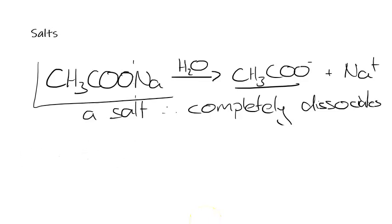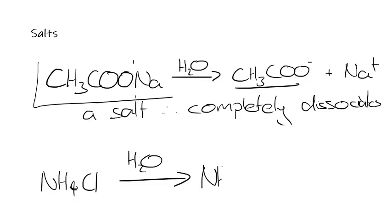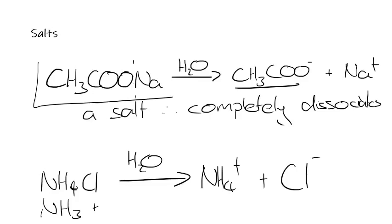Another common salt is NH₄Cl. That will also completely dissociate into NH₄⁺ plus Cl⁻. Because that gives a high concentration of ions, it will be a good conductor. So any salt is going to be a good conductor, even compared to ammonia. Ammonia only slightly dissociates, so ammonia would not be as good a conductor as ammonium chloride.